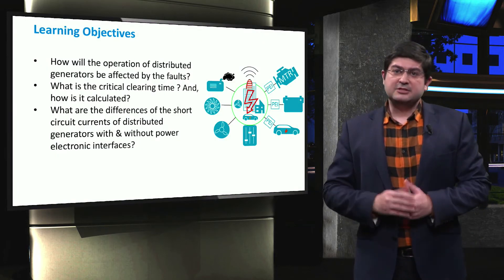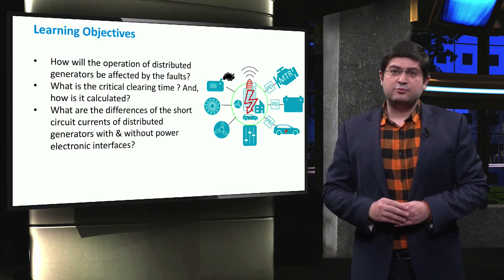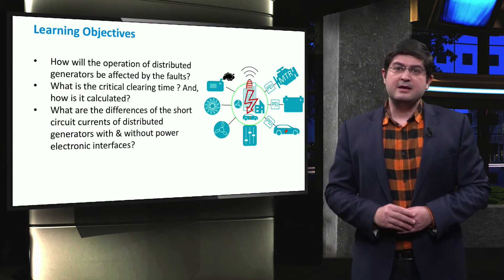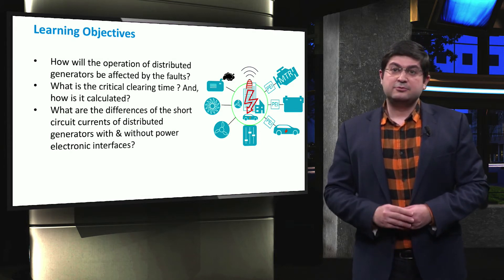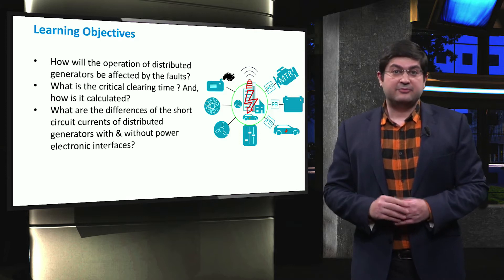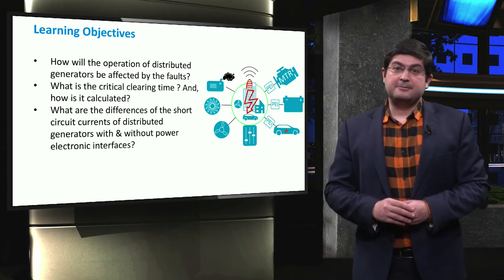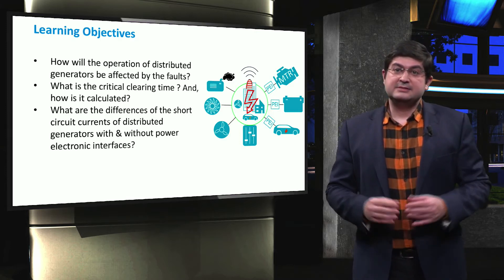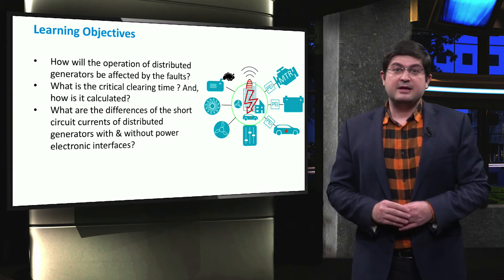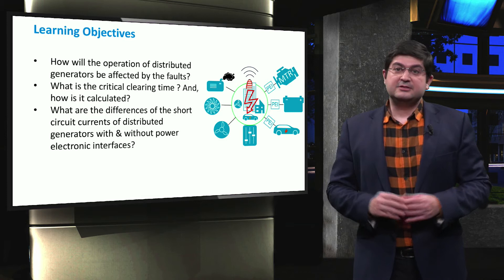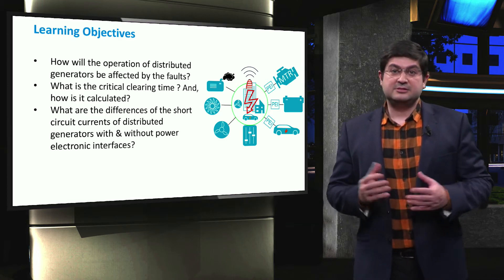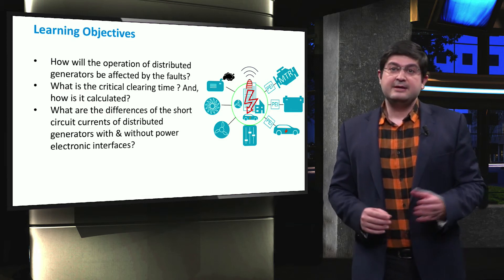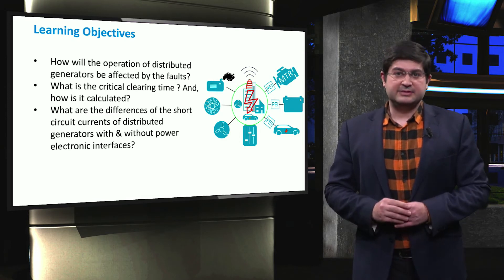The main learning objectives will fall under three main questions. Firstly, how will the operation of the distributed generators be affected by faults? Secondly, what is the critical clearing time and how is it calculated? Thirdly, what are the differences of the short-circuit currents of the distributed generators with and without power electronic interfaces?